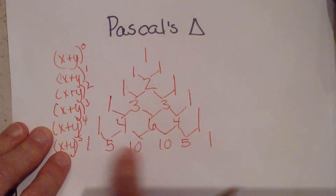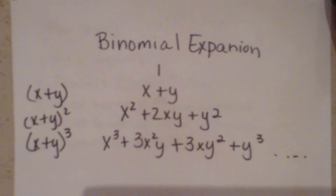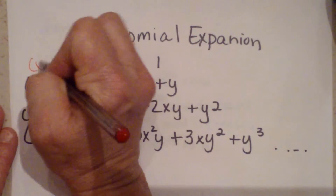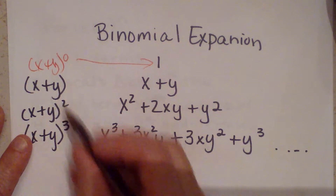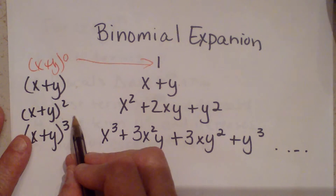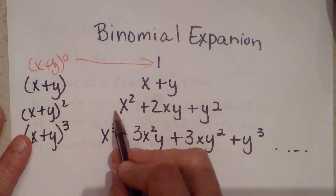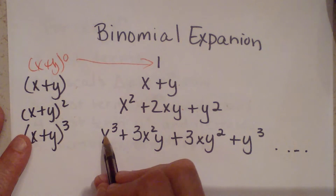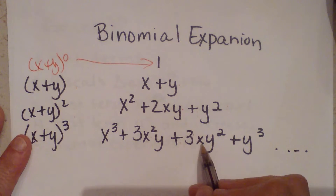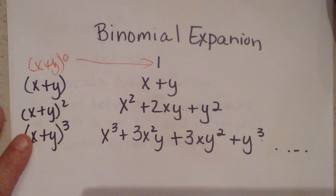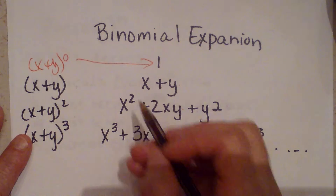That's the first part — learning to expand and understanding coefficients. The second thing we need to look at is the actual terms themselves, not just the coefficients. When we have x plus y to the zero degree we get one. To the first degree we get x plus y. To the second degree we get x squared plus two xy plus y squared. To the third degree we get x cubed plus three x squared y plus three x y squared plus y cubed.